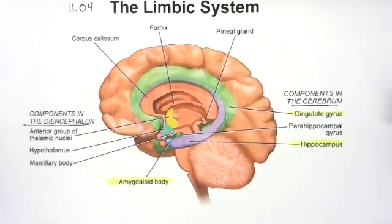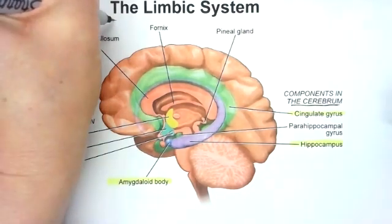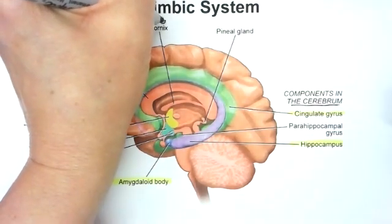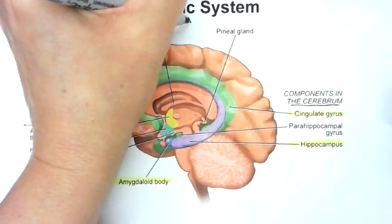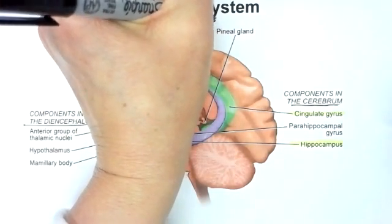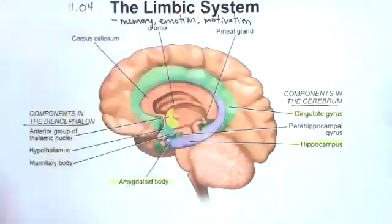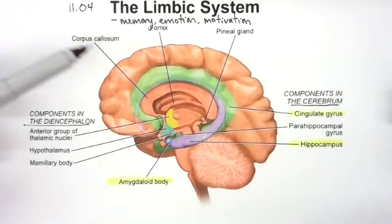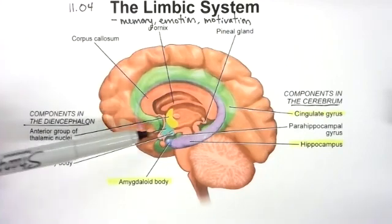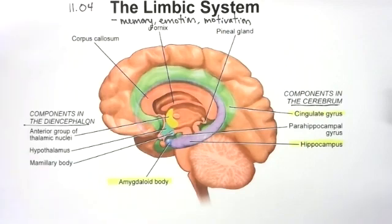What's the purpose of this limbic system? This is the seat of your emotions and memory — it takes care of forming memories and processing emotion. If you're feeling it, it's here. Also, it has a component in motivation; it allows us to have the desire to want to do something. These structures work together, processing what's going on in the cerebrum and then processing what's going to happen in the diencephalon.